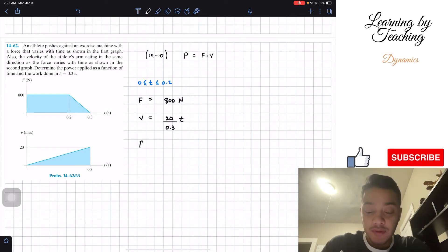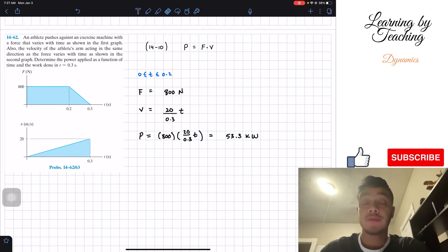Then what we can do is say, hey, our power is going to be the multiplication of these two. So we got 800 multiply by 20 divided by 0.3 t. And if we put this into our calculator, this will give us a total of 53.3 kilowatts. So I'm putting my units as kilowatts. So we're done with the first interval.